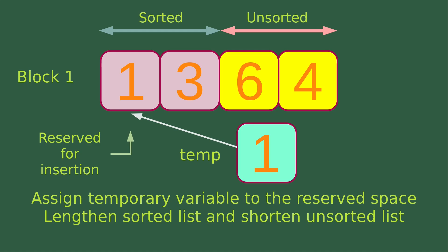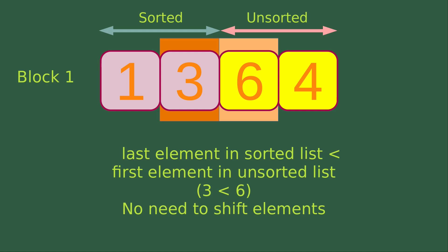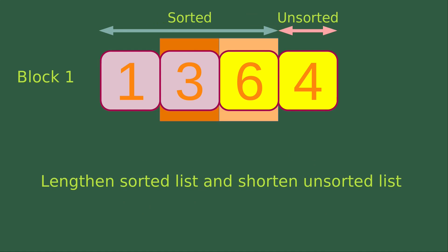Then we assign the temporary variable to the reserved space. We can see that temp is now copied to the place reserved for insertion. We lengthen the sorted list and shorten the unsorted list, so now the sorted list has two elements while the unsorted list has only two elements. In the next round, the last element in the sorted list is smaller than the first element in the unsorted list — we have 3 less than 6 — so we don't need to shift elements. We just lengthen the sorted list and shorten the unsorted list, giving three elements sorted and one unsorted.